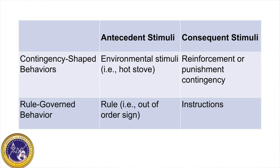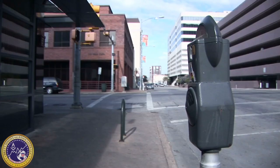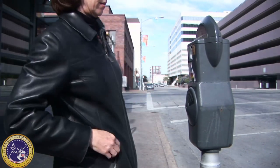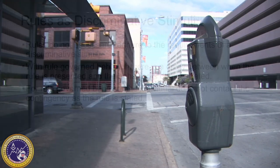Let's do a quick comparison. For contingency-based behavior, the antecedent stimuli is the environment — like a hot stove — and the consequence stimuli would be the reinforcement or punishment contingency. For rule-governed behavior, the antecedent stimuli are the rules — for example, a sign that says 'out of order' — and the consequence stimuli are the instructions themselves. If you don't use a parking meter with a sign that says 'out of order,' that would be considered rule-governed behavior. If you use it anyway, lose your money, and in the future don't use a parking meter with a sign that says 'out of order,' that would be considered contingency-shaped behavior.